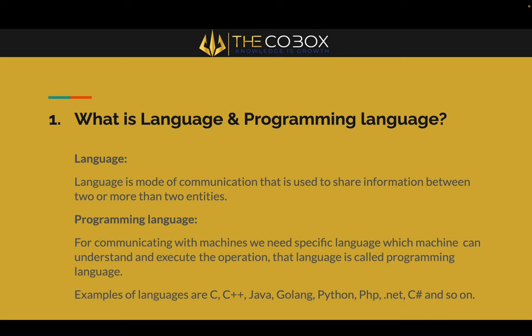If we are talking with anyone, there should be one mode of communication to understand the points — like English or any other language. But if you are dealing with a computer, the computer doesn't know your language like English. So for that purpose, great people invented what is called a programming language — a specific language which the machine can understand and execute operations. Examples include C, C++, Java, Go, Python, PHP, .NET, C#, R, and so on.